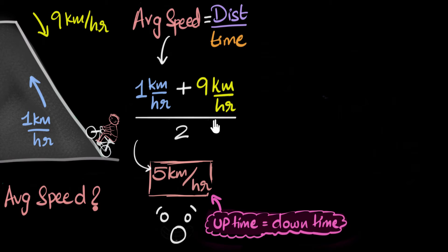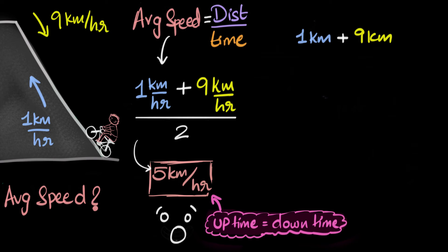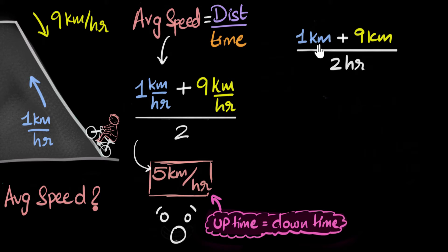Let's assume it took him one hour to go up and one hour to come back down — that's not true, but let's assume it. Then if it took him one hour to go up, he would travel one kilometer up and nine kilometers down. The total distance would be one plus nine, and the total time would be one plus one — two hours. So the average speed would be 10 divided by two, which is exactly five kilometers per hour. Do you see that this answer only works when the time to go up is exactly the same as the time to come back down?